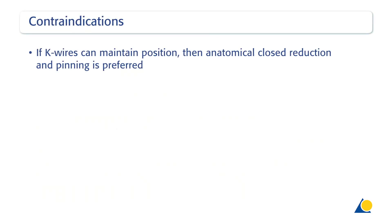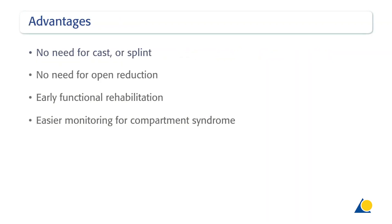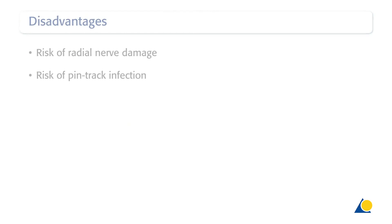If K-wires can be used to maintain position, then anatomical closed reduction and pinning is preferred. The advantages are: there is no need for casting or splinting, no need for open reduction, early functional rehabilitation is possible, and it allows easier monitoring for compartment syndrome. The disadvantages are: a risk of radial nerve damage if the proximal shunt's screw is inserted too proximally, and a risk of pin-track infection.